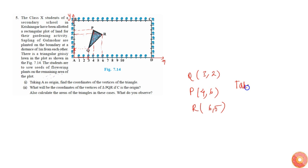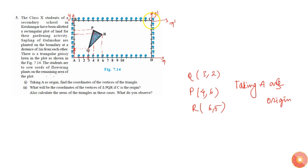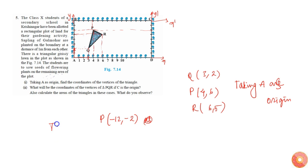Now if we take C as origin, this will become X-dash and Y-dash axes. P will be at minus twelve comma minus two. Counting in this direction: one, two, three, four, five, six, seven, eight, nine, ten, eleven, twelve — so P becomes minus twelve comma minus two taking C as origin.